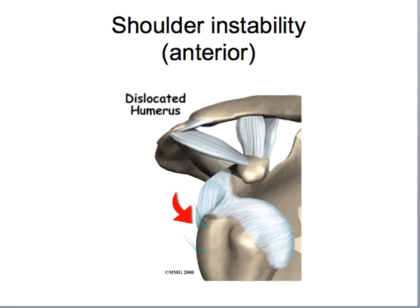Stability of the shoulder is typically through some static restraints, such as capsules and bone, as well as dynamic restraints through muscles and ligaments. But injury to either type of restraint will cause changes in the neural input and even add to more instability. Typically with the shoulder, we'll see an anterior instability, which is the most common. The shoulder might subluxate or dislocate, where the head of the humerus comes anterior to the glenoid fossa.